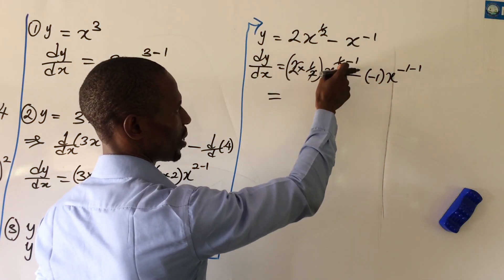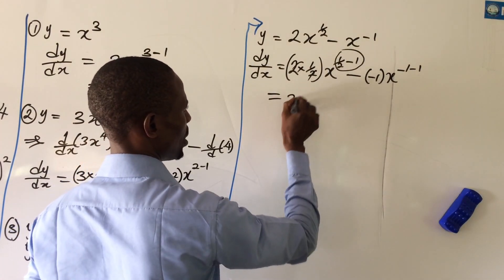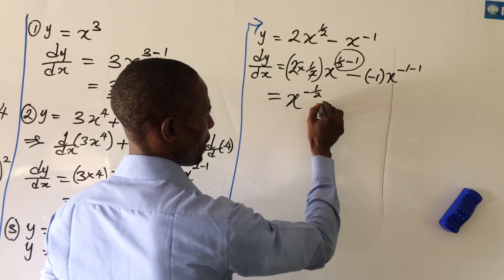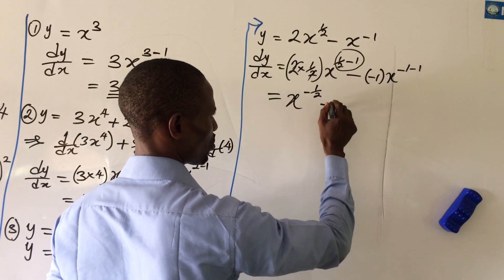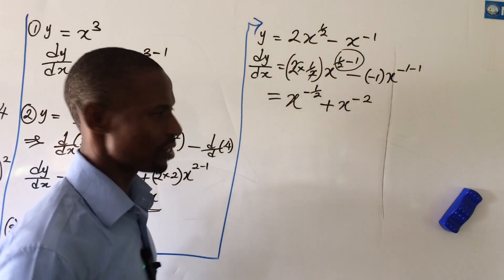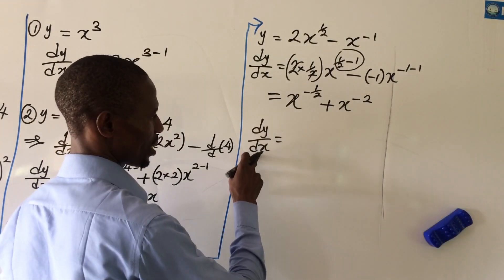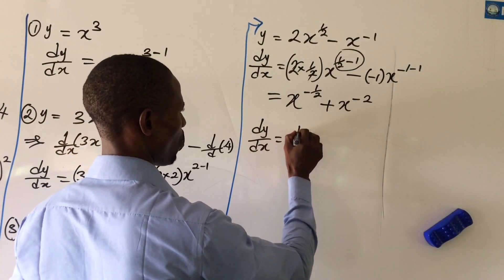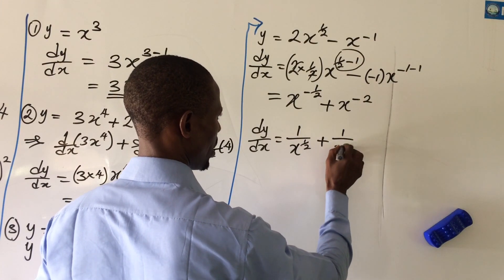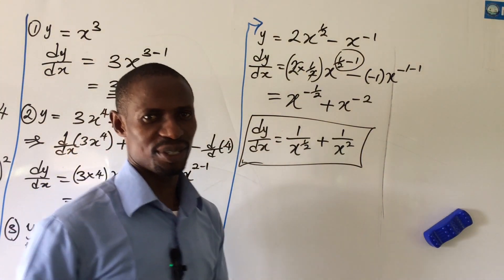Carrying out the operations, the 2 and 1/2 cancel, leaving x to the power of -1/2. The minus times minus gives plus, and -1 minus 1 gives -2, so we get x to the power of -2. Applying the law of indices again, dy/dx equals 1 over x^(1/2) plus 1 over x². That is the answer to Question 3.